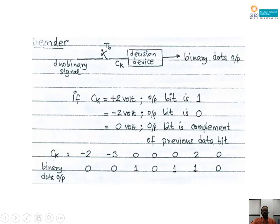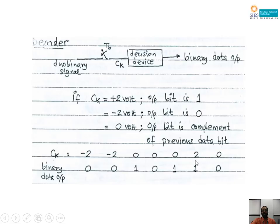Applying this algorithm to the received voltages -2, -2, 0, 0, 0, +2, 0: minus 2 → output 0; minus 2 → output 0; 0 → complement of previous 0 = 1; 0 → complement of 1 = 0; 0 → complement of 0 = 1; plus 2 → direct decision = 1; 0 → complement of previous 1 = 0. This is exactly the same as the original bits 0, 0, 1, 0, 1, 1, 0. So using this algorithm, original bits can be regenerated at the output.